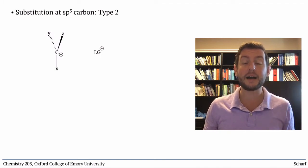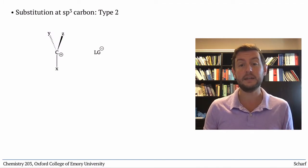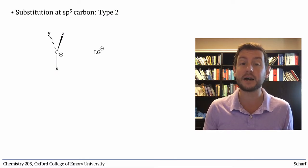This leaves behind a carbocation, a pretty unstable sort of species since it has an unfilled octet on carbon.